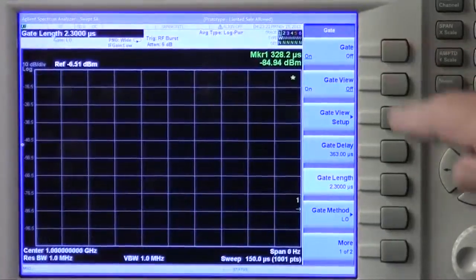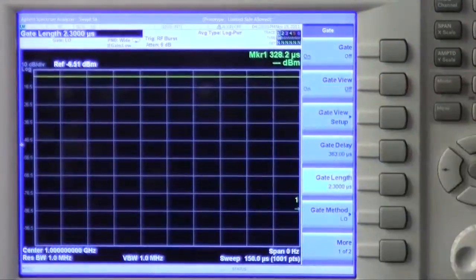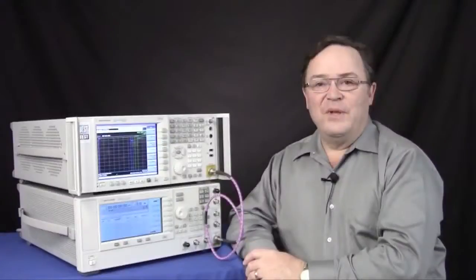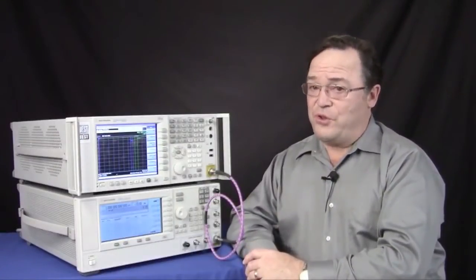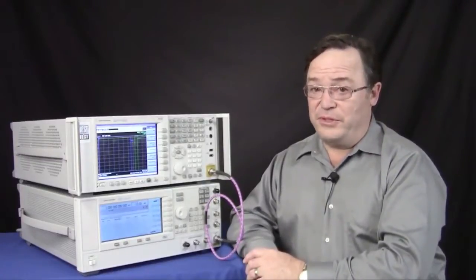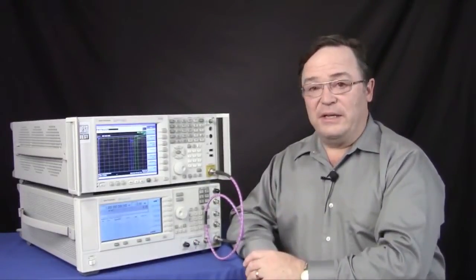So that when I turn on the gate, I get a solid line at the top of the screen, which is what you want. So that's how gate view start time makes it easier to make measurements on narrow pulses in the PXA signal analyzer.